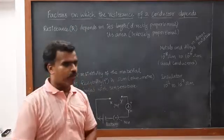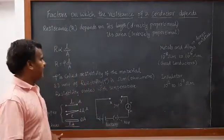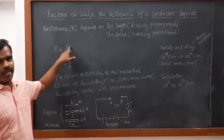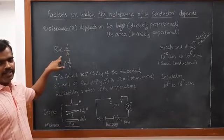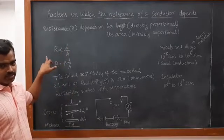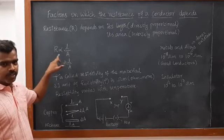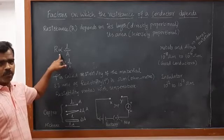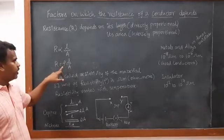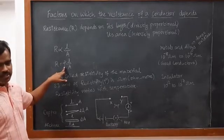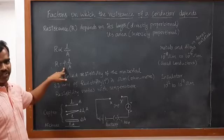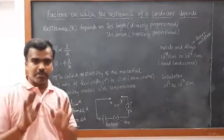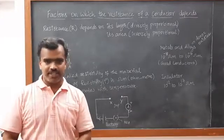R is directly proportional to L, where L is the length of the wire, and A is the area of cross-section. R is directly proportional to L and inversely proportional to area of cross-section. When removing this proportional sign, we add a constant called resistivity, denoted by ρ, which mainly depends upon the nature of the material.